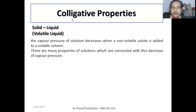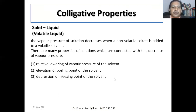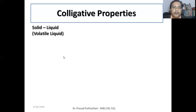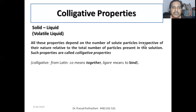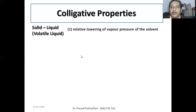There are many properties — namely what we call colligative properties. These colligative properties are connected with the decrease of vapor pressure. The colligative properties are: relative lowering of vapor pressure, elevation of boiling point, depression of freezing point, and osmotic pressure of the solution. Colligative properties depend on the number of solute particles irrespective of their nature, relating to the total number of particles present in the solution. The term is derived from a Latin word meaning 'together bind.'